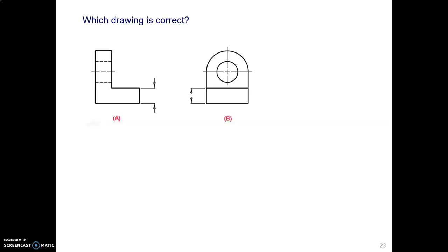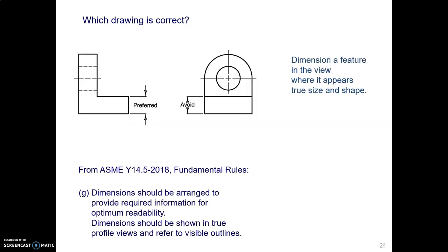Here are two views of the same part. It's an L-shaped part with a radius back. Which view should have that thickness dimension? And the answer is it should be the view on the left, because the rule says we want to dimension a feature in the view where it appears true size and shape.